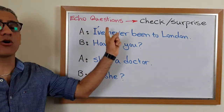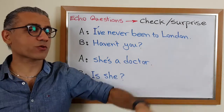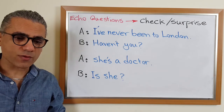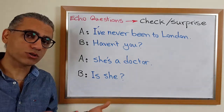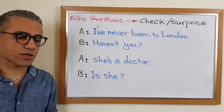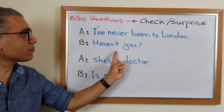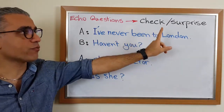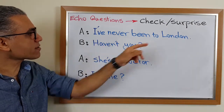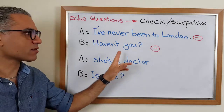The last thing we'll talk about today is echo questions. We use echo questions to check the information we are receiving or to express our surprise. Don't confuse echo questions with tag questions. Tag questions are asked by the same person who said the sentence. With echo questions, two people are involved — the first person says something, and the other person uses the echo question to check for information or express surprise. Another difference: in an echo question, if the sentence is positive, the echo question is positive too; if negative, the echo question is also negative — they're not opposite.